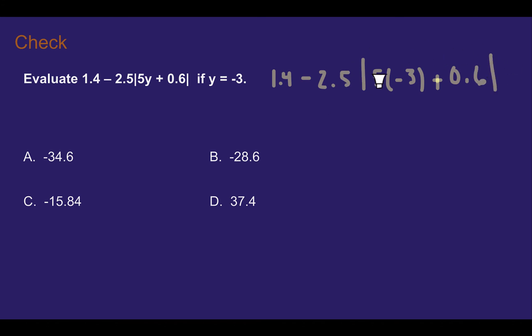Solving absolute value first. 5 times negative 3 is negative 15 plus 0.6. So that makes a negative plus a positive brings it closer to 0. So negative 14.4. Then I'm going to take the absolute value of that which makes it positive. So positive 14.4.